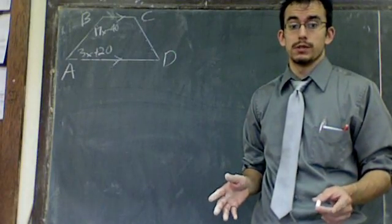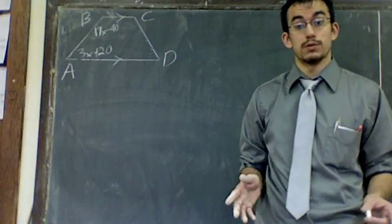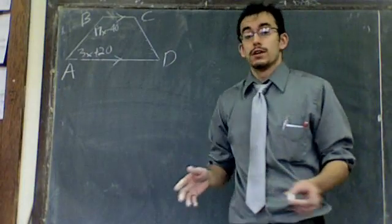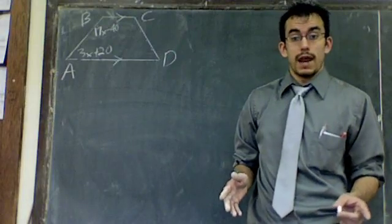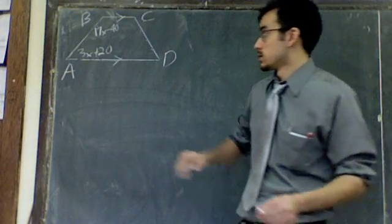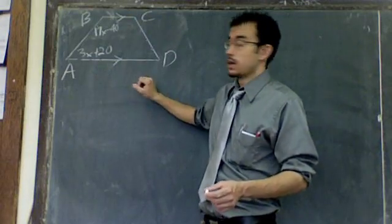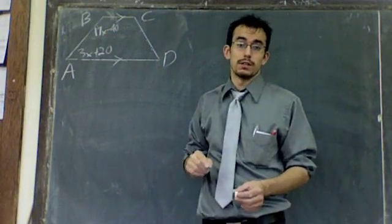All right, what we're going to work with here are trapezoids. What you might remember is that a trapezoid is a four-sided figure, a quadrilateral, that has one set of parallel sides. Here I've got AD is parallel to the top, BC is my one set of parallel sides.